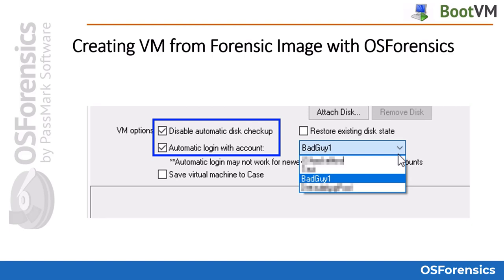In this last section of settings, you will have the option to disable the automatic disk checkup at startup, which can often occur when the system wasn't shut down properly. You can also choose to log in to the account automatically, therefore bypassing the need to know or enter the Windows user account password. You will need to specify the user account you wish to boot into, and finally select whether you wish to save the virtual machine to your case.